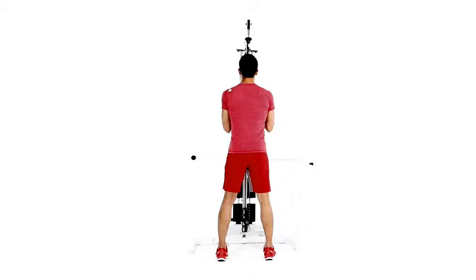Facing the pulley station, grab the rope attachment set to a high pulley with a thumbs up grip.